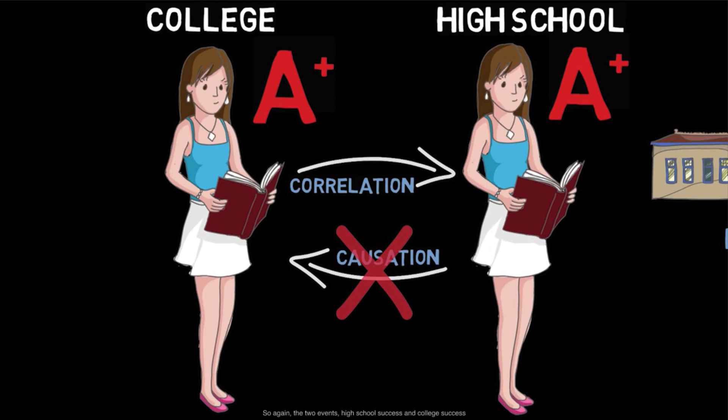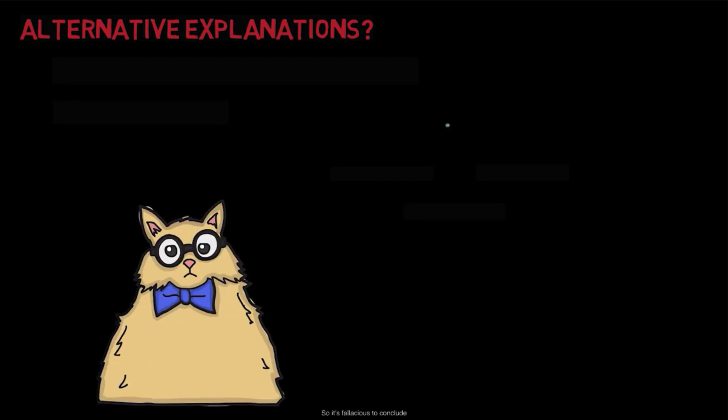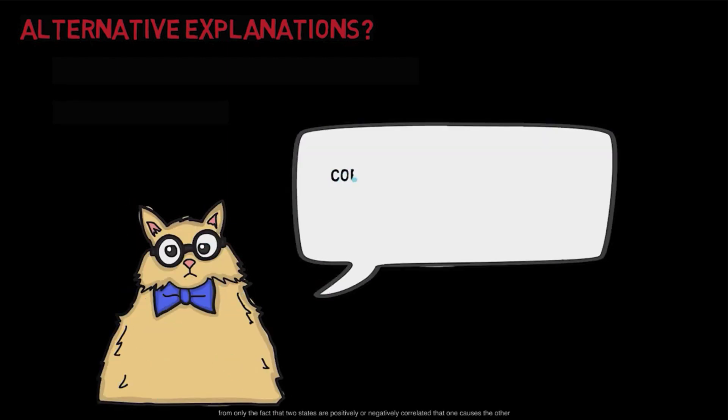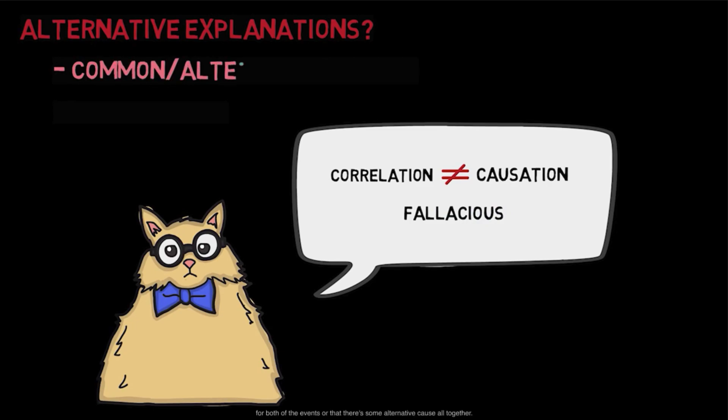So, again, the two events, high school success and college success, are positively correlated, but they do not cause one another. When two events are correlated, it may seem that one causes the other. But there may be alternative explanations we've ignored, like working hard in college courses causes that person's overall success in college. So, it's fallacious to conclude from only the fact that two states are positively or negatively correlated that one causes the other, because there may be another cause that explains the outcome. It may be that there's a common cause for both of the events, or that there's some alternative cause altogether. On the other hand, the correlation might just simply be a coincidence.